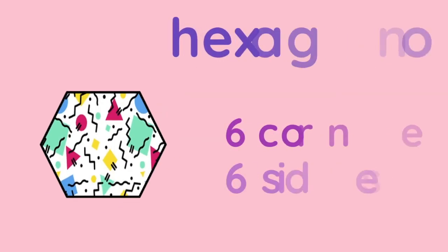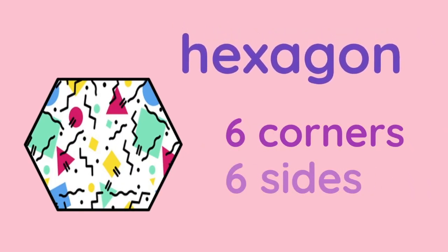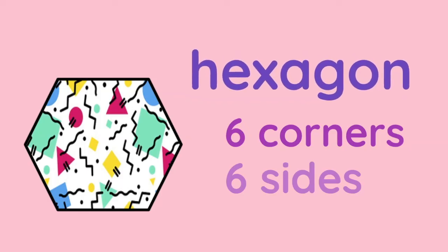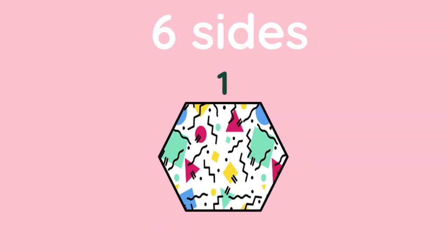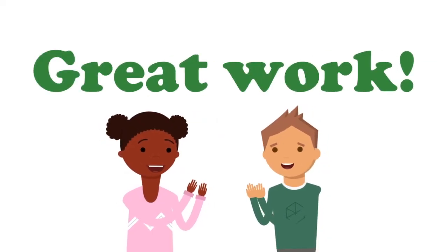Hexagon: six corners, six sides. Six corners: 1, 2, 3, 4, 5, 6. Six sides: 1, 2, 3, 4, 5, 6. Great work. Thank you.